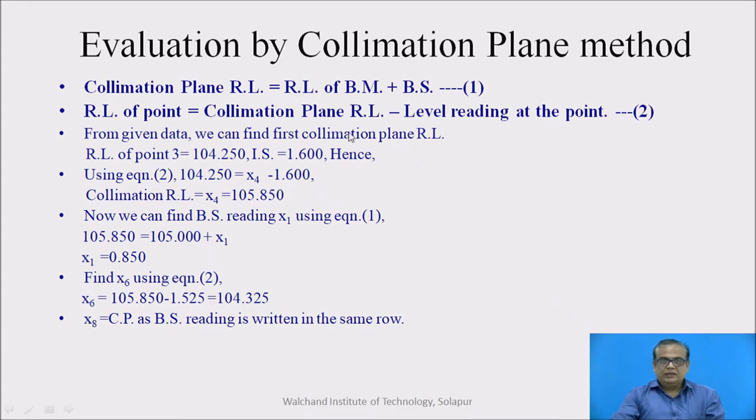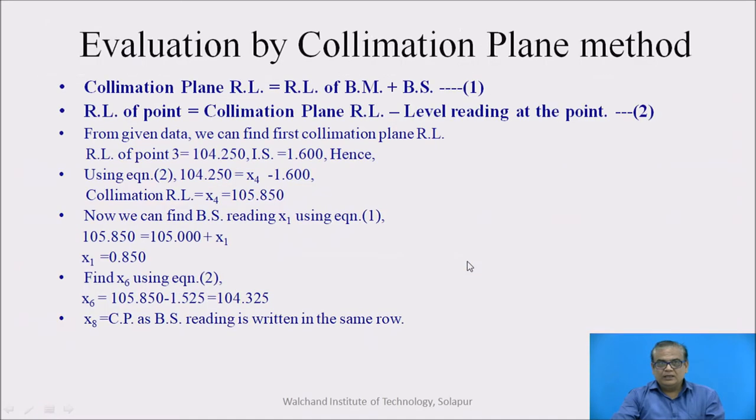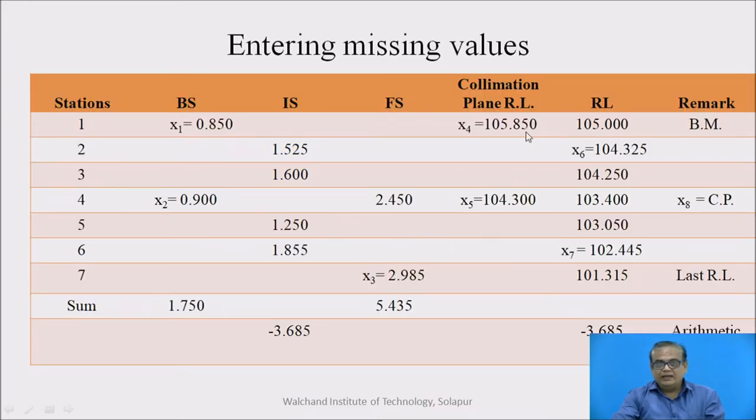So using this second equation, we can find now collimation plane RL, X4. We know collimation plane RL X4 minus 1.600 must be equal to 104.250. So only one unknown X4 is equal to 105.850. So enter the value here X4 is 105.850.